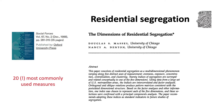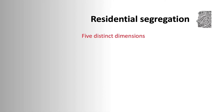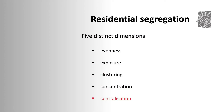From their analysis, they proposed five distinct dimensions: evenness, exposure, clustering, concentration, and centralisation. Of these, evenness is the most important, as it's the dimension that leads to all the others. If a group is evenly distributed, then there will be no segregation in any of the other dimensions.